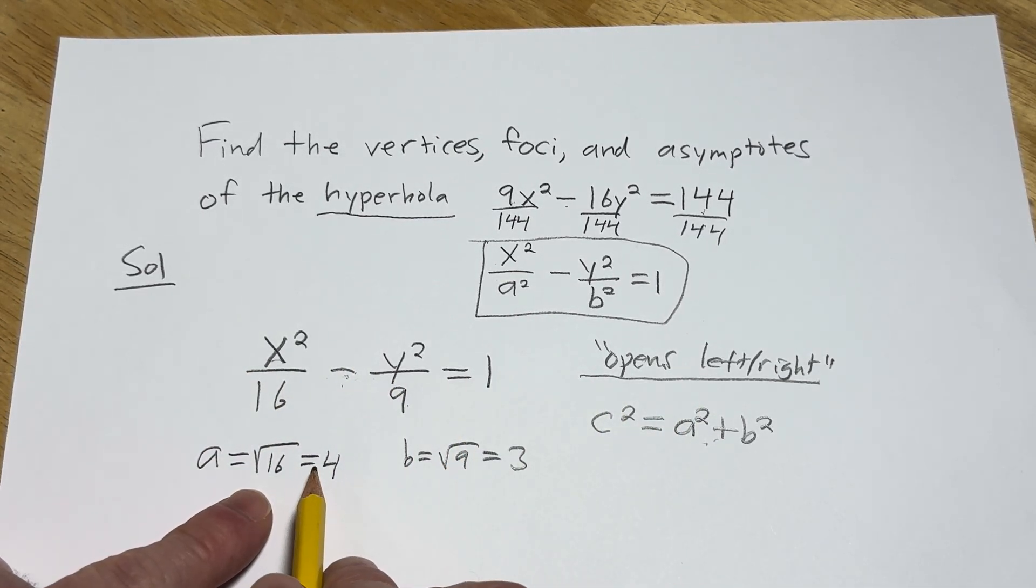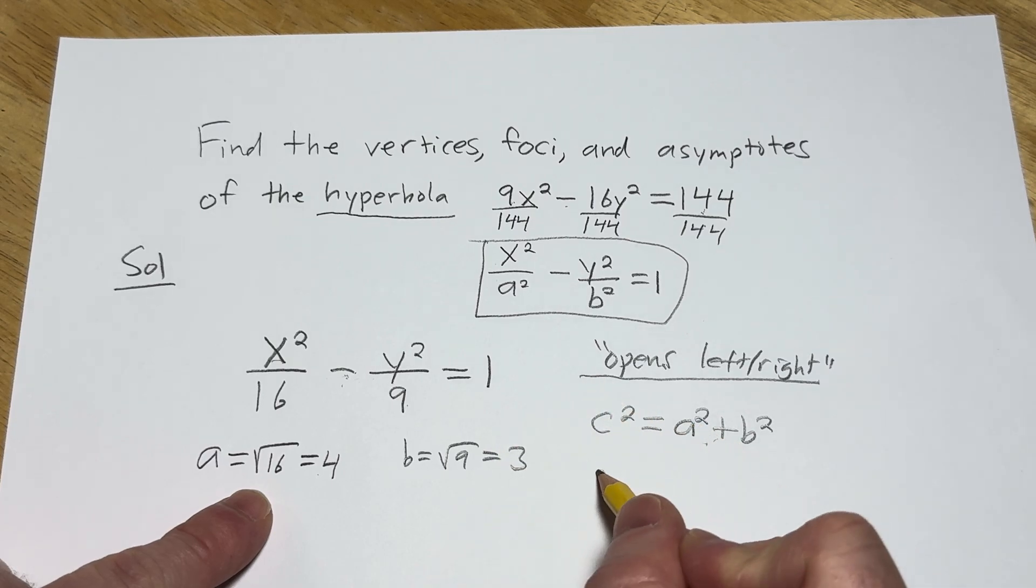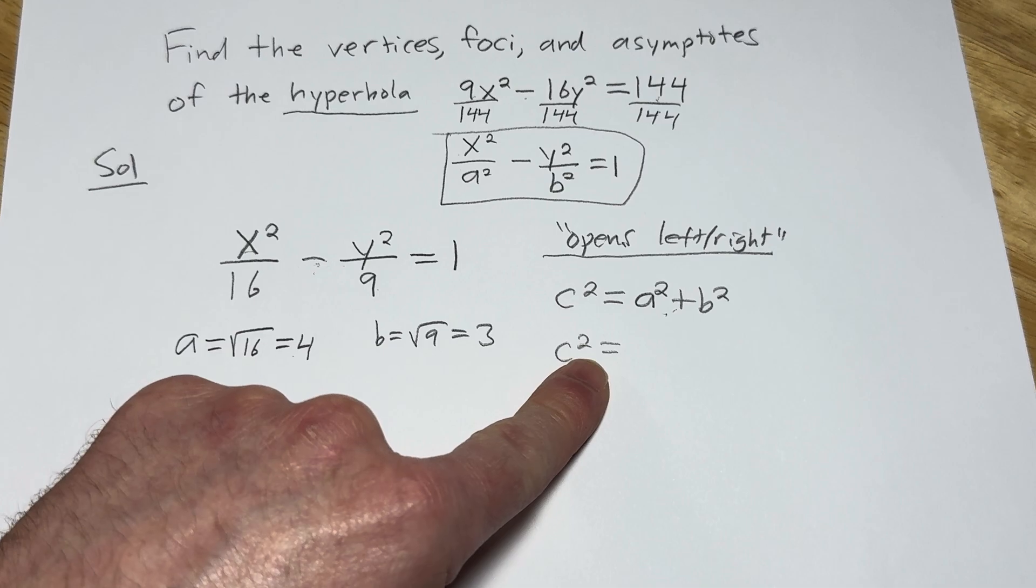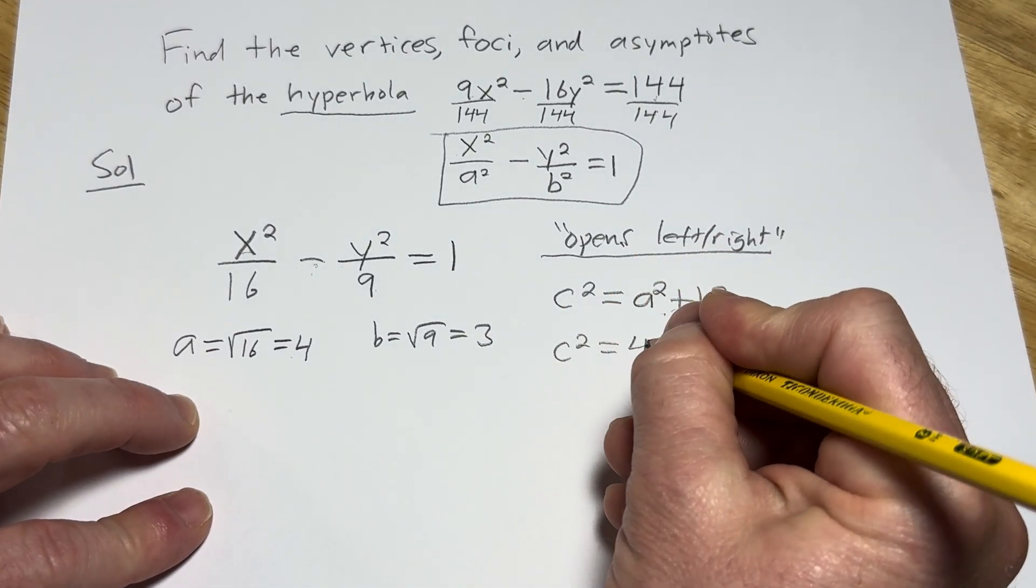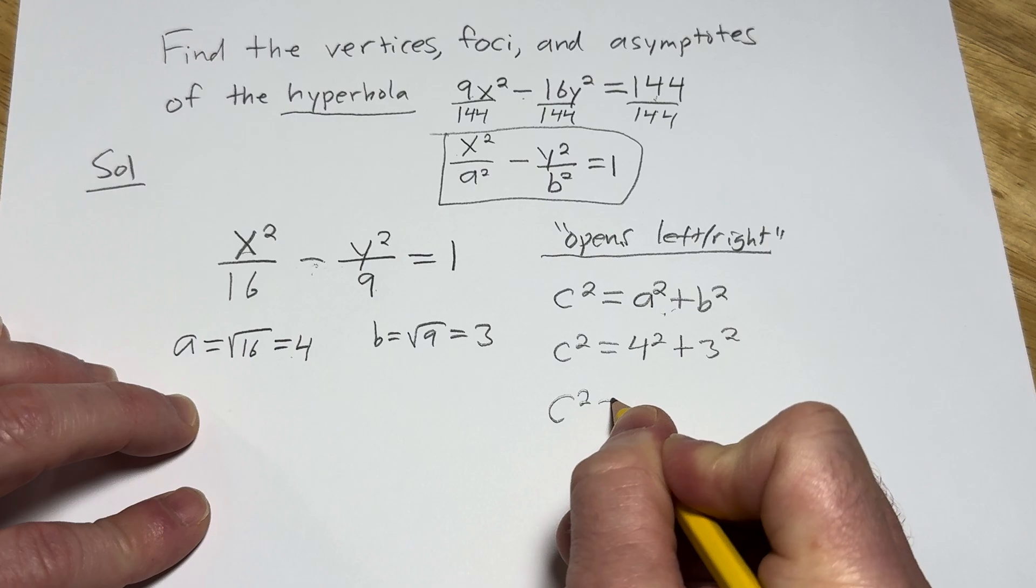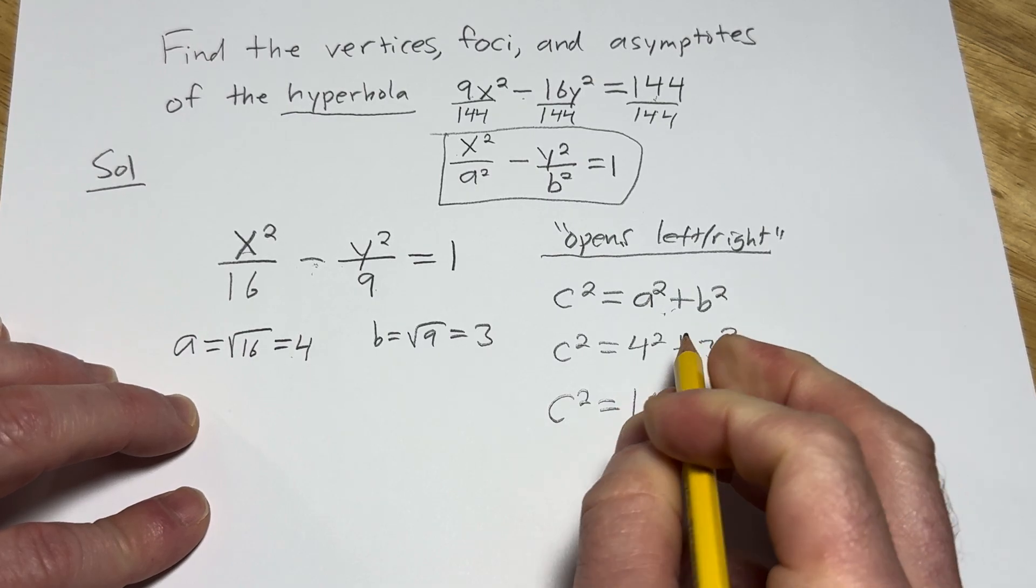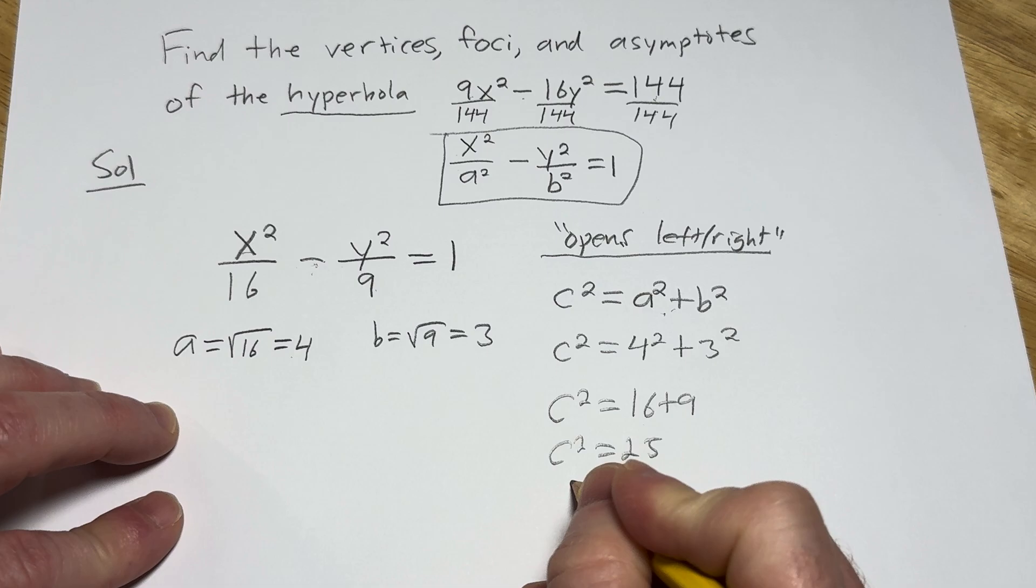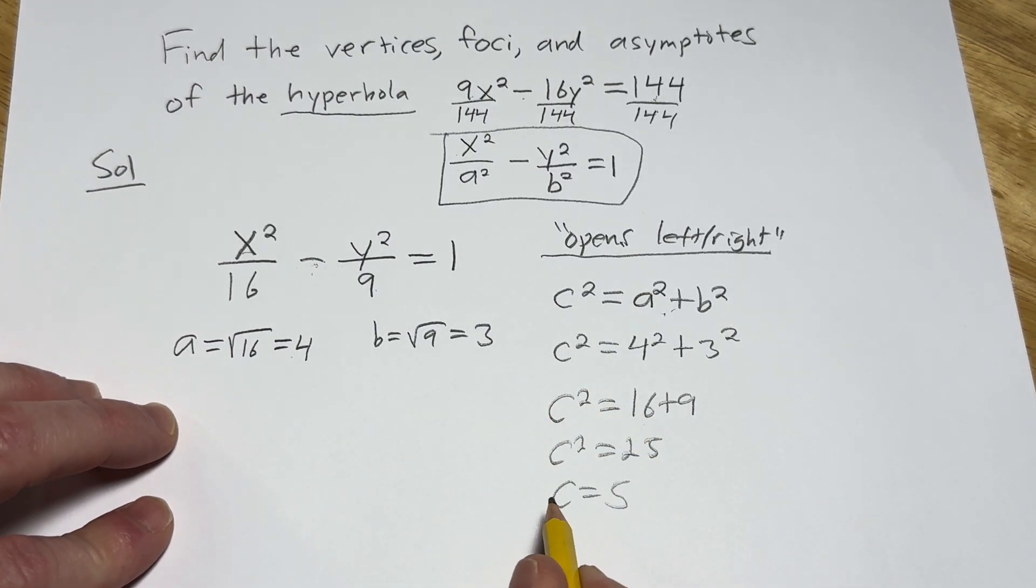Now we can just plug in A and B and solve for C. So C squared is equal to, well, A is 4, so it's going to be 4 squared. And then B is 3, so it's 3 squared. So C squared is equal to 16 plus 9. So C squared is equal to 25. So C is equal to 5. And that's going to be our C.